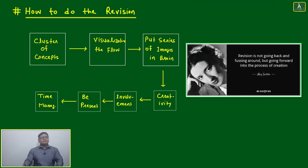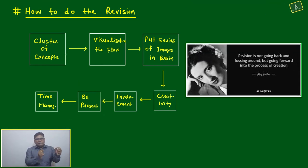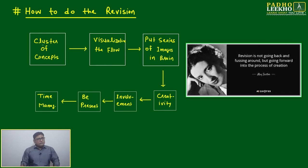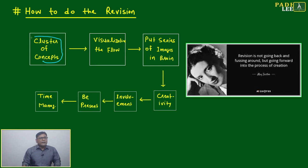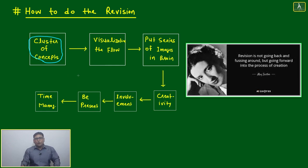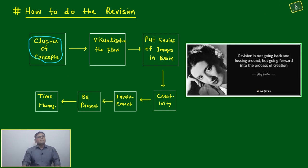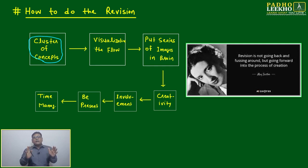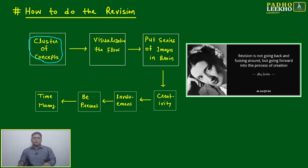First thing is that we should not revise independent chapters or independent concepts in isolation. We have to make a cluster of concepts — that is the idea of content planning, like block-wise, and how chapters are interrelated to each other. This cluster of concept approach helps you visualize the flow of the concept from one point to another point.